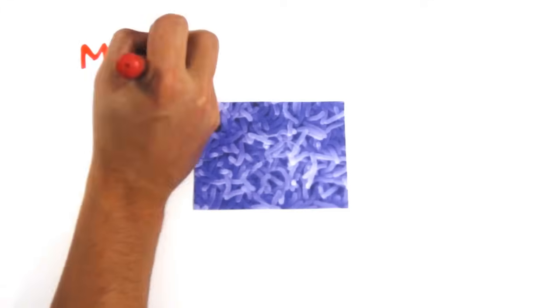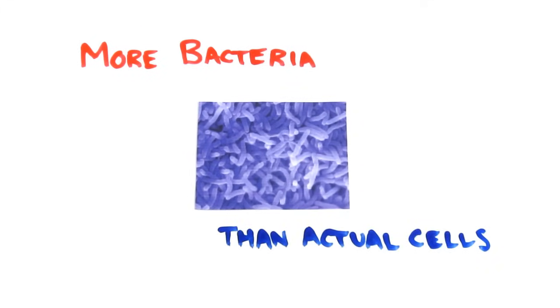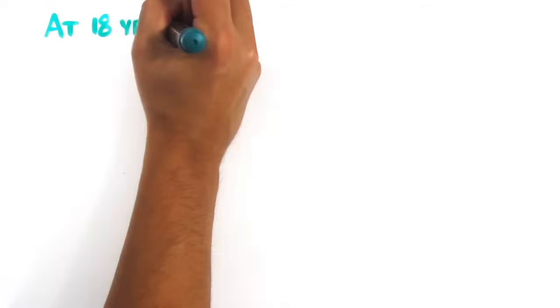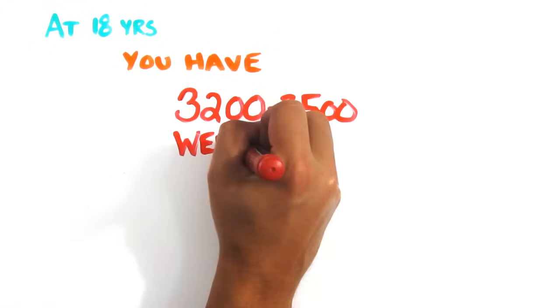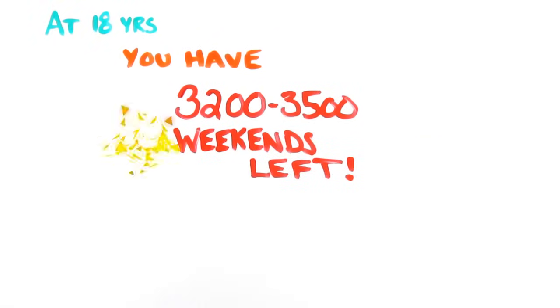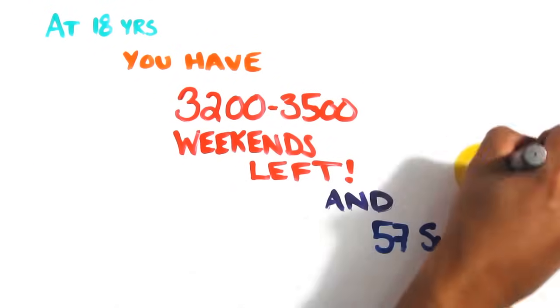All the while, there are more bacterial cells in your body than actual somatic body cells. And if you've made it to age 18, you have, on average, 3,200 to 3,500 weekends left in your lifetime. More importantly, you only have about 57 summers left.